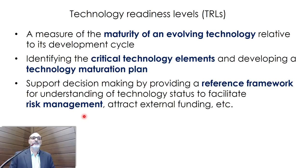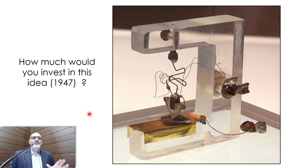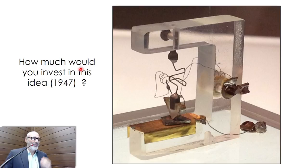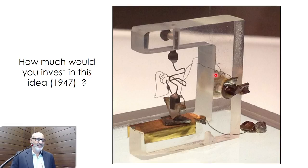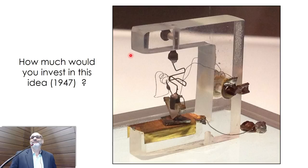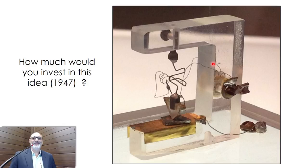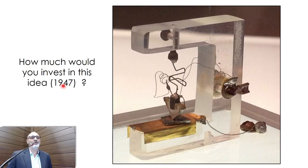The second guideline is identifying critical technology elements — bottlenecks that hinder development — allowing you to construct a technology maturation plan and plan how things will evolve over time. The third is that TRL must also serve as a decision support tool, providing a reference framework for understanding technology status to facilitate risk management and attract external funding. Let me try to make an experiment. How much would you invest in this idea? Picture this: an inventor comes to you and says he invented something, has a patent, constructed a pilot plant, tested it — but needs money.